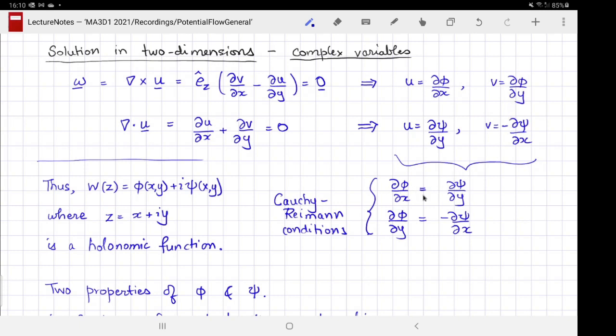Now, I have two expressions for the x component of velocity and two for y component of velocity. If I equate them, I get del phi del x is del psi del y, and del phi del y is minus del psi del x. You will recognize this as the Cauchy Riemann conditions from complex variables for the real and imaginary part of a complex function of z equals x plus i y to constitute a holonomic function or an analytic function.